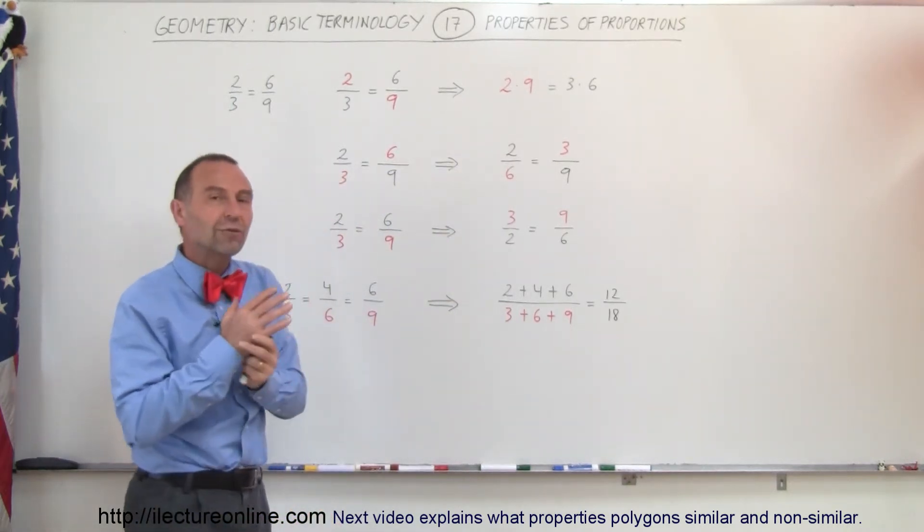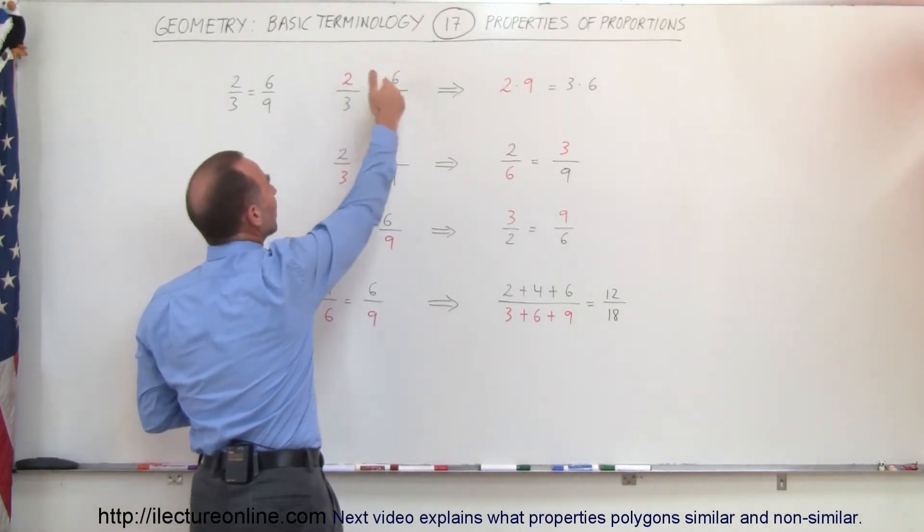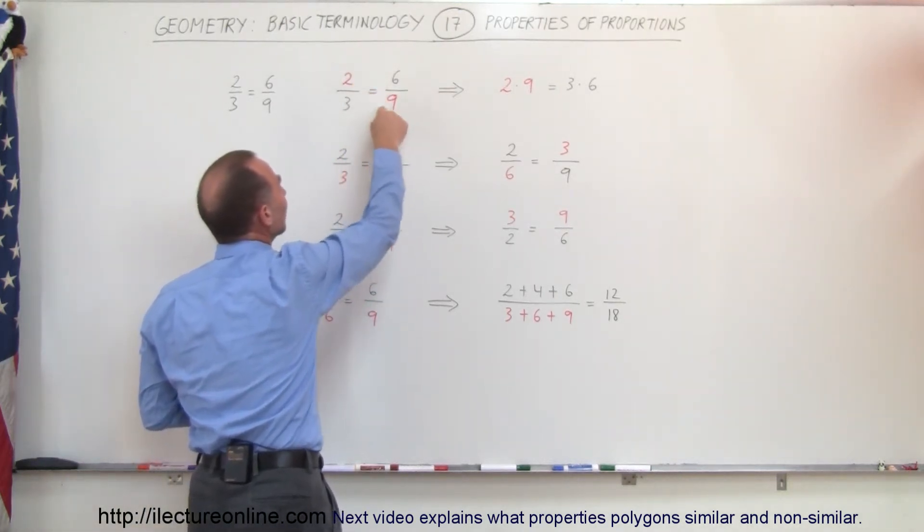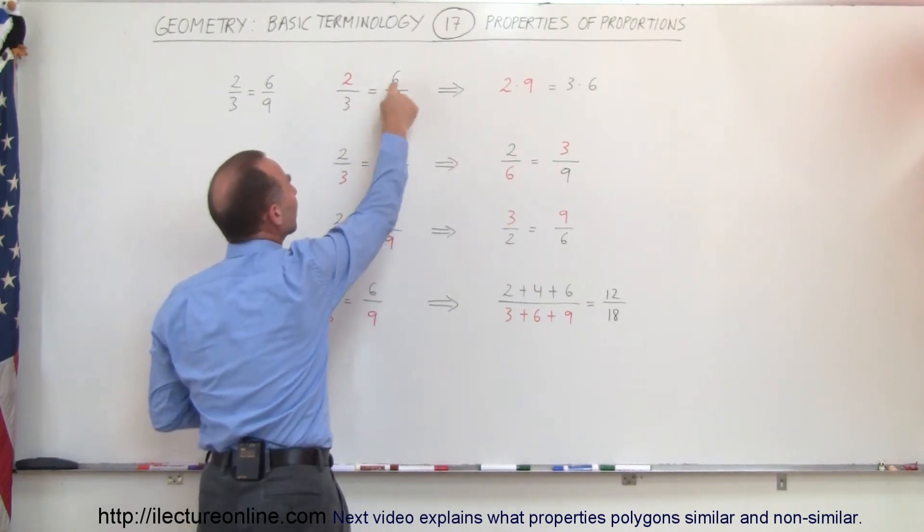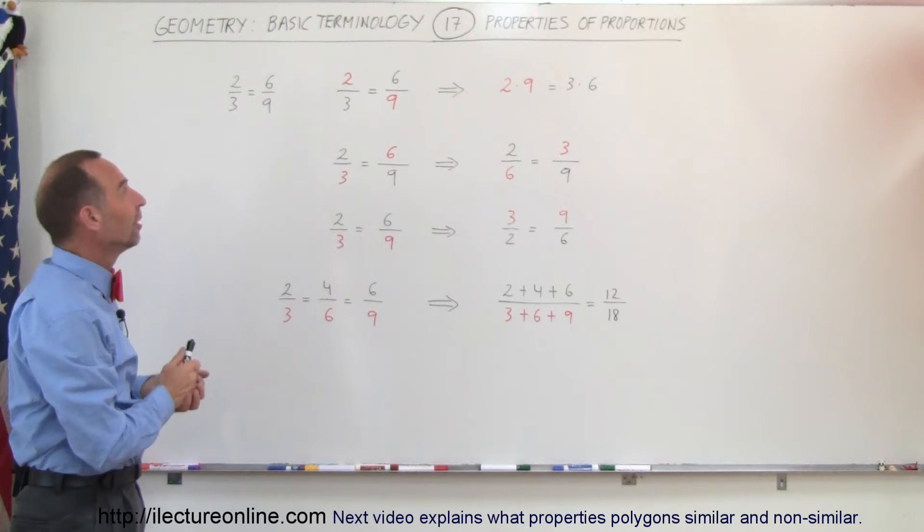In other words, another way of saying this is we can cross-multiply the members in the diagonal. So we can multiply 2 times 9 and set it equal to 3 times 6, just like we showed you there. So that is one of the properties of proportions.